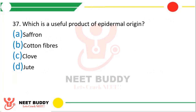Question number 37: Which is a useful product of epidermal origin? Saffron, cotton fibers, clove, or jute. The correct answer is Option B, cotton fibers.